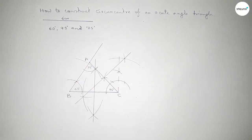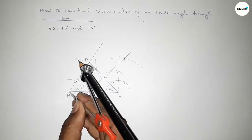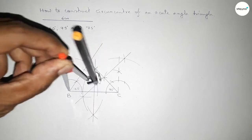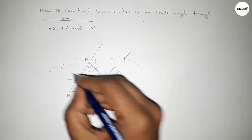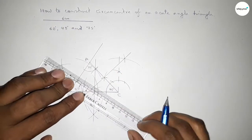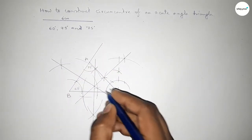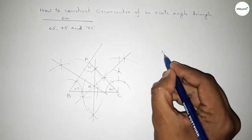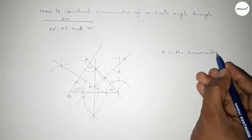Next we have to bisect line AB. Putting the compass and taking greater than half of AB, drawing an arc with the same length, cutting here — both curves intersect at two points. Joining this bisector. The three bisectors intersect at a point, so we take here point H. Therefore H is the circumcenter of this acute angle triangle ABC.